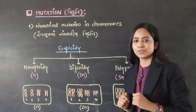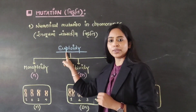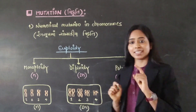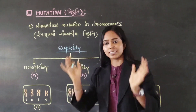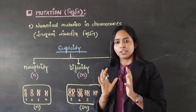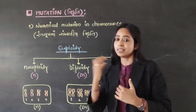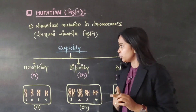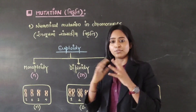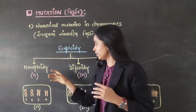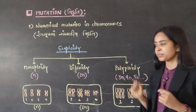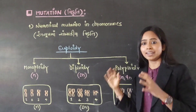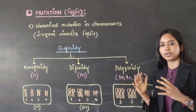Now let's try to understand the concept of Euploidy from this diagram. Euploidy, as I have said, involves the entire set — you can see the chromosome number increases or decreases as a whole set. Euploidy is divided into three different types. The first type is Monoploid, the second type is Diploid, and the third one is Polyploid.